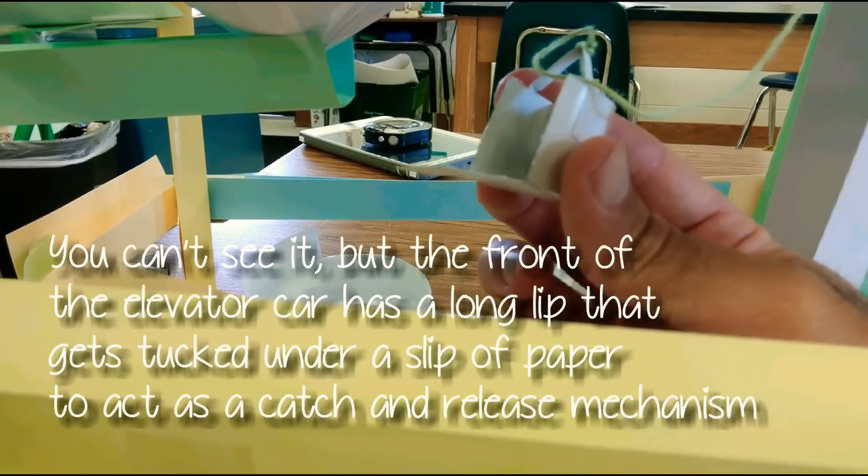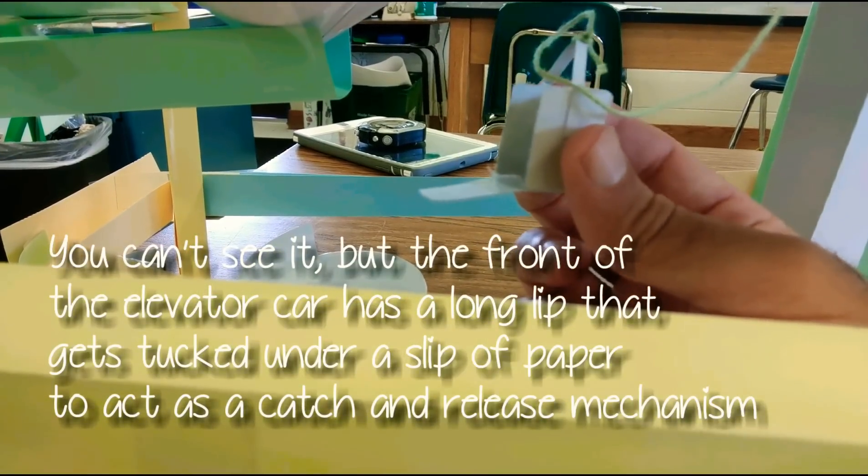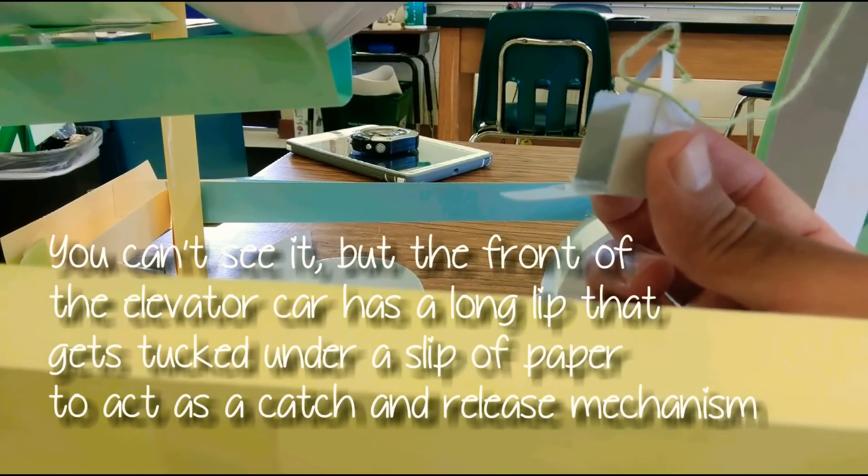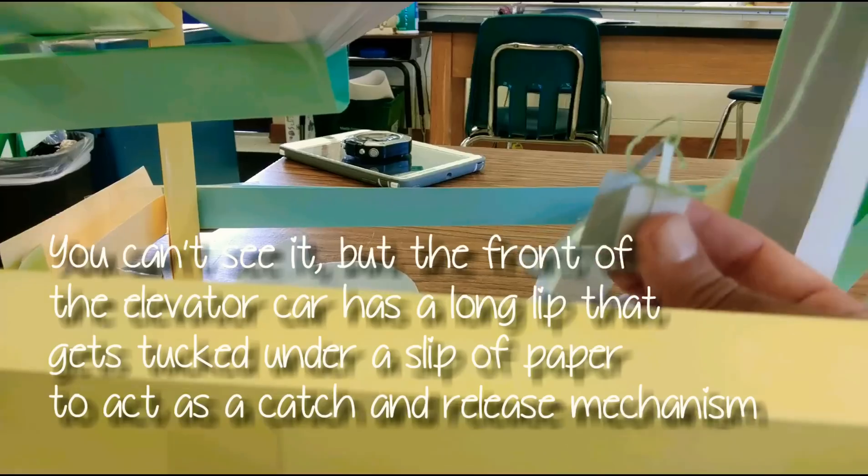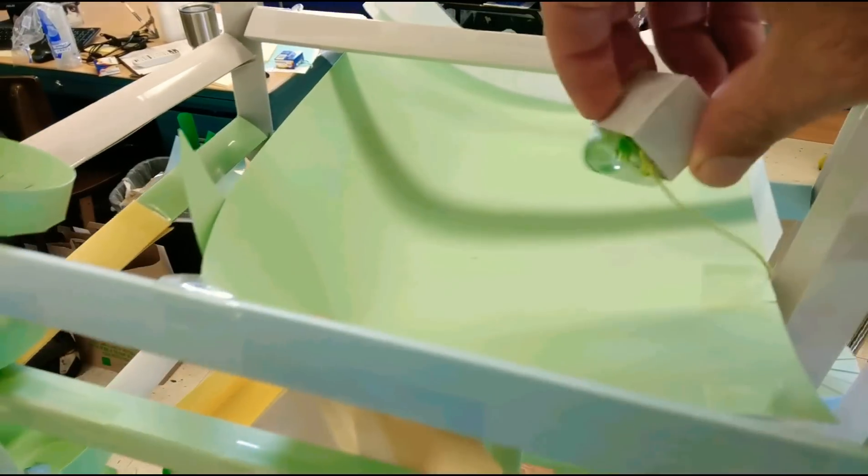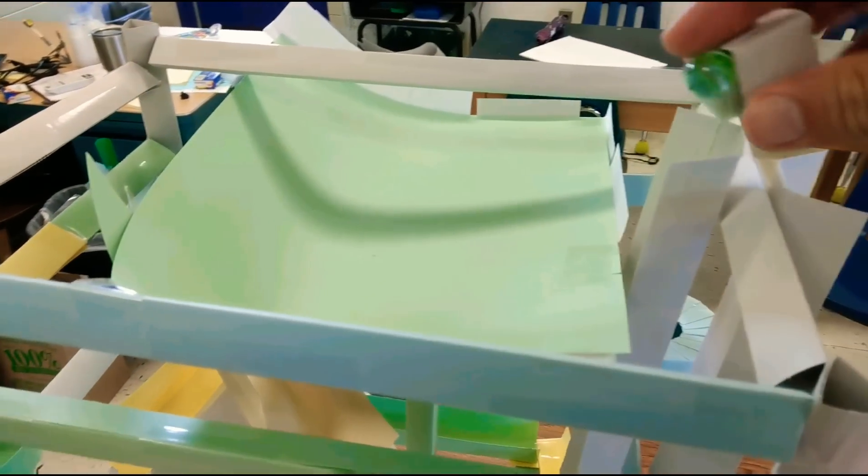Hopefully you can see it in the video. That prevents the marble from rolling out. So it comes in with a little bit of force. It has to be able to push the elevator car backwards. But at the same time, you don't want it to roll out of the front. So the counterweight, once that's set up, it's important to get the right amount of weight in the back.